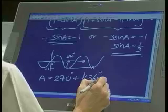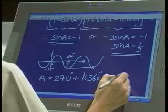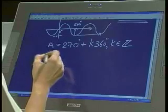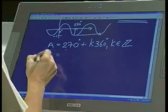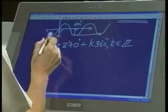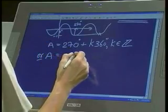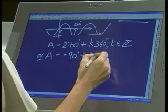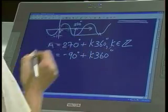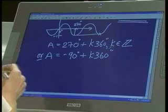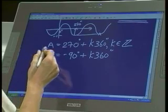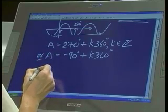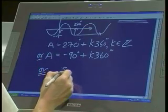Okay, and or, alternatively, you can say that a could also be negative 90, and then 360 degrees later, you would get your next function value. Okay, or a is negative 90. Either this solution or that solution, it doesn't have to be both, but we do have a second set of solutions.